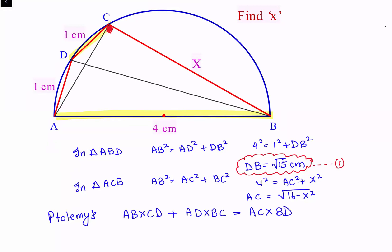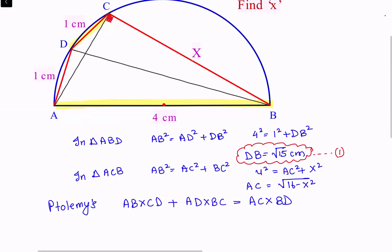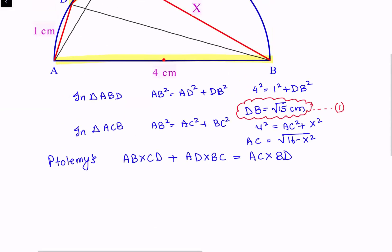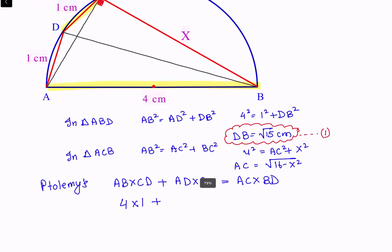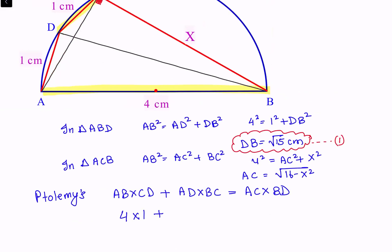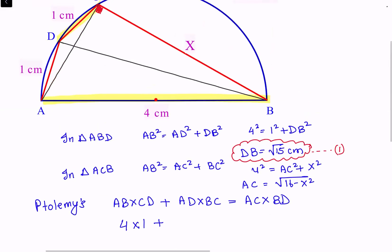The proof of this theorem will be linked in the description. Putting in the values: AB is 4, CD is 1, AD is 1, and BC is X which we have to find. This equals AC times BD, where AC is √(16 − X²) and BD is √15.